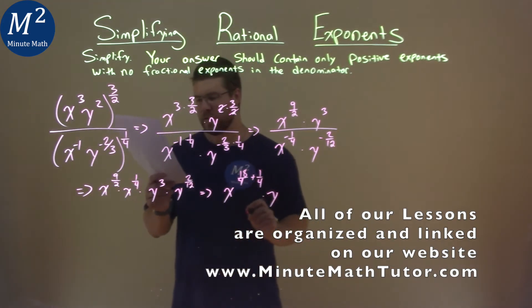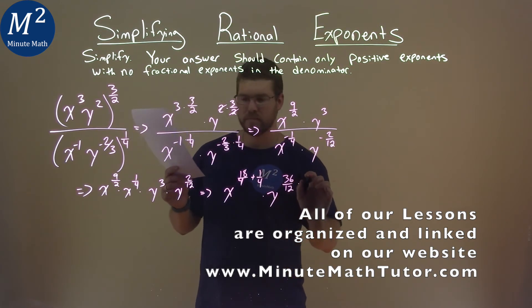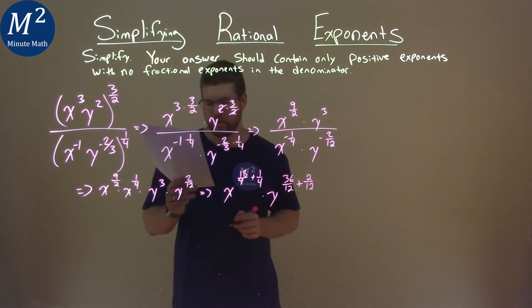And then y, we're doing the same thing. Three is the same thing as thirty-sixth over twelve, and two over twelve. We're adding those exponents.